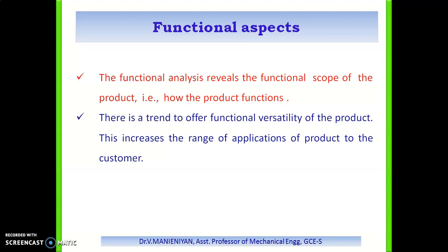The functional scope of the product has to be carefully analyzed and properly defined. The functional analysis revolves around the functional scope of the product — that is, how the product functions. For example, using a washing machine, clearly define the objective of washing. However, this does not state how the washing should be carried out — whether drying or spinning should be done within the machine, or whether it should be automatic or manual. Likewise, functional analysis influences the design of the machine.